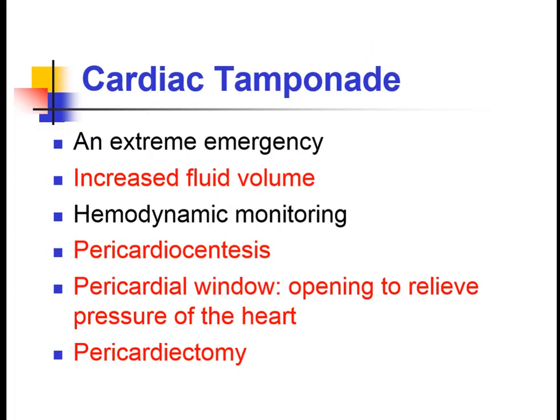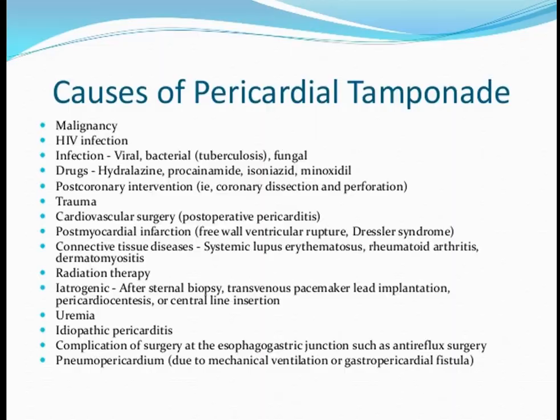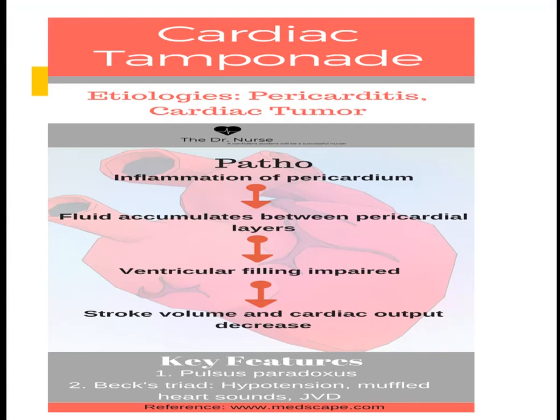In cardiac tamponade, there is increased fluid volume in the pericardial space requiring emergency hemodynamic monitoring. Causes include malignancy, infection, cardiovascular surgery, post-myocardial infarction, or other surgeries. The pathophysiology involves inflammation of the pericardium, fluid accumulation in the pericardium, impaired ventricular filling, and a decrease in stroke volume and cardiac output.